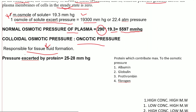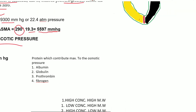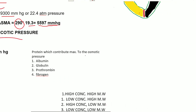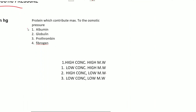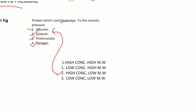Colloid osmotic pressure — also called oncotic pressure — is responsible for tissue fluid formation. The pressure exerted by plasma proteins is 25–28 mmHg. An MCQ asks: which protein contributes maximum to osmotic pressure? Options are albumin, globulin, prothrombin, and fibrinogen. Recall that the substance with high concentration and low molecular weight contributes most — that is albumin.